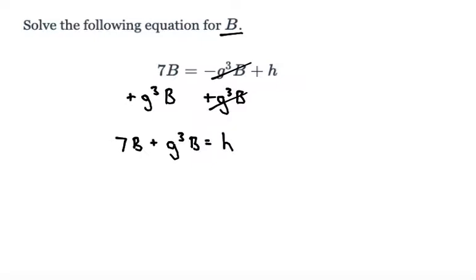Now that I've gotten both terms with b on the same side, I can factor out my b. I'll put my b on the outside. What's left out of 7b after I take out a b is just 7, and what's left out of g cubed b after I take out a b is g cubed, a positive g cubed.